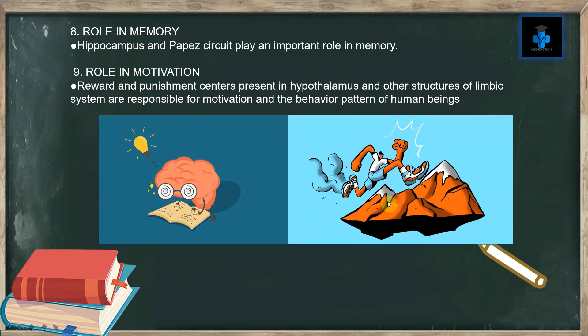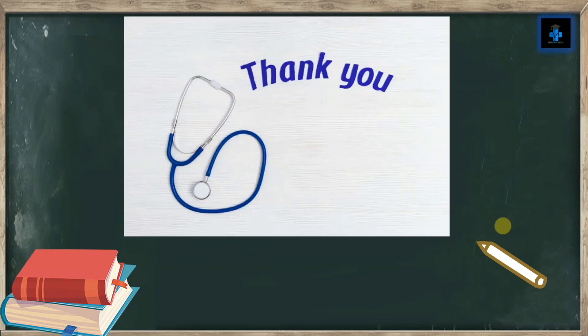Ninth, role in motivation — reward and punishment centers present in the hypothalamus and other structures of the limbic system are responsible for motivation and behavior patterns of human beings. Hope you have understood the video. Please like, subscribe, and press the bell button for more videos. Thank you for watching.